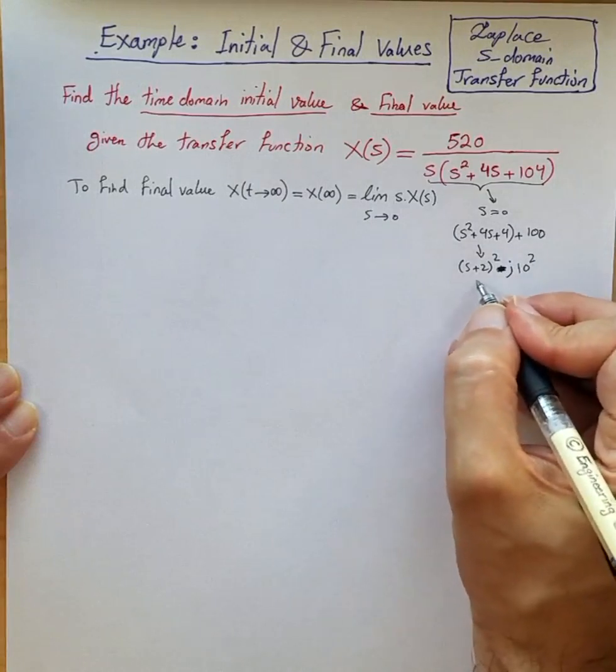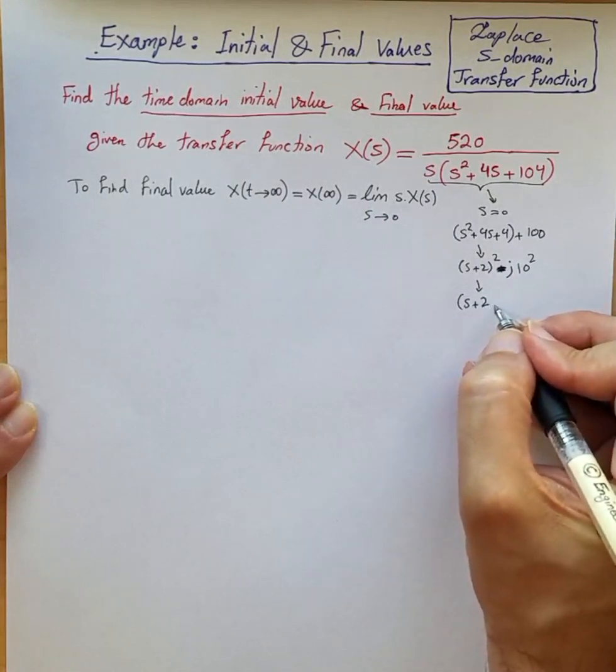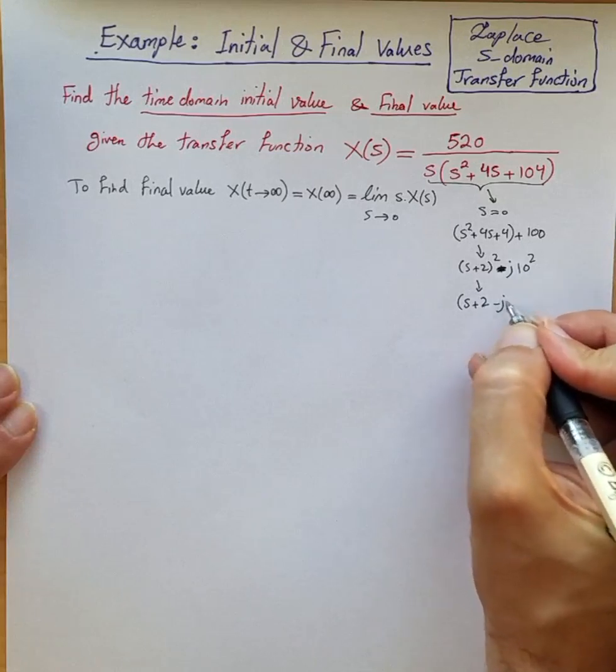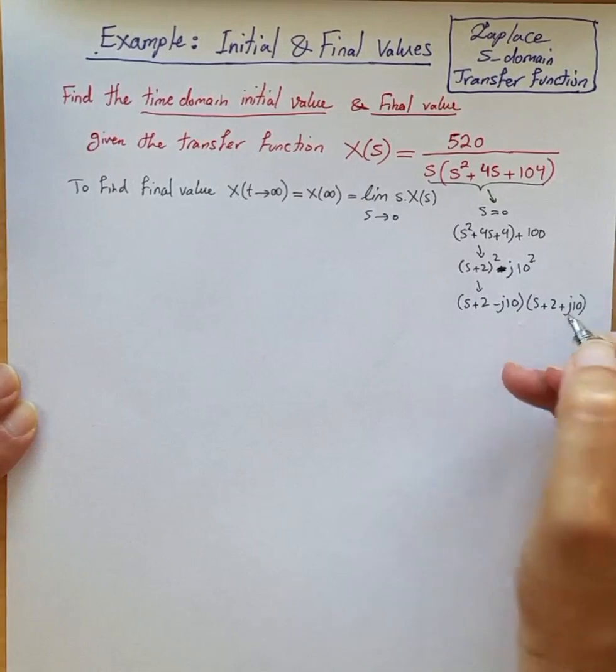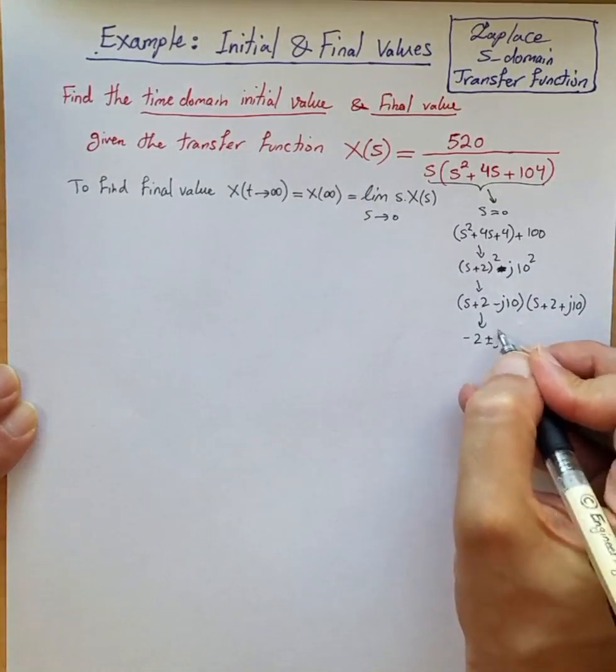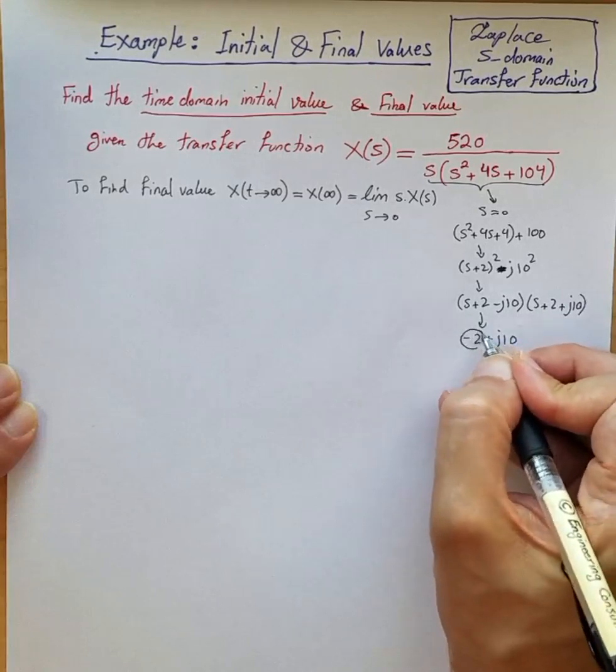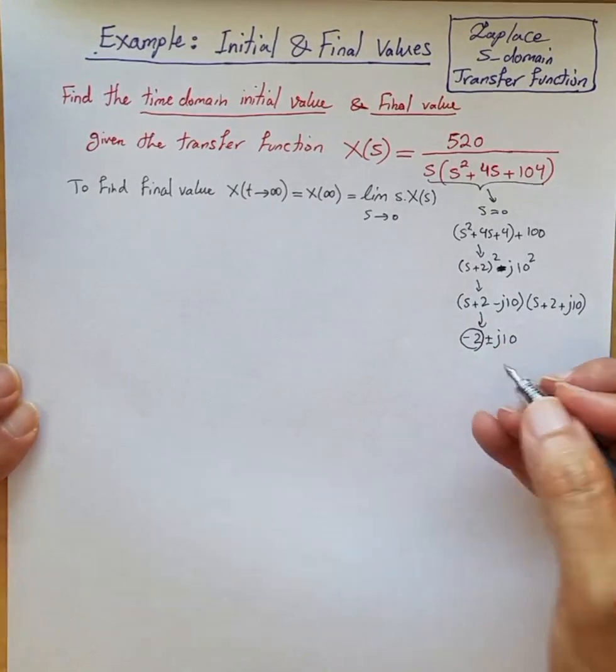Which results in (s+2-j10)(s+2+j10). This means the poles are -2±j10, and this -2 indicates that the remaining complex conjugate poles are located on the left-hand side of the s-plane.